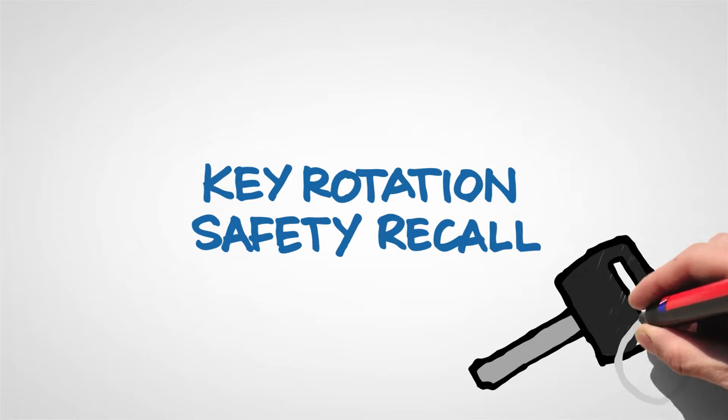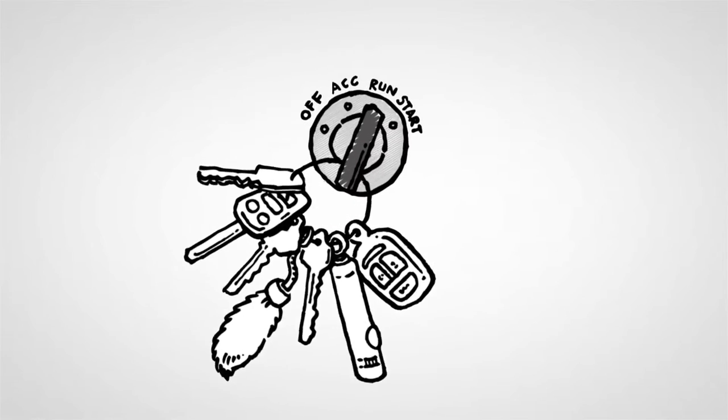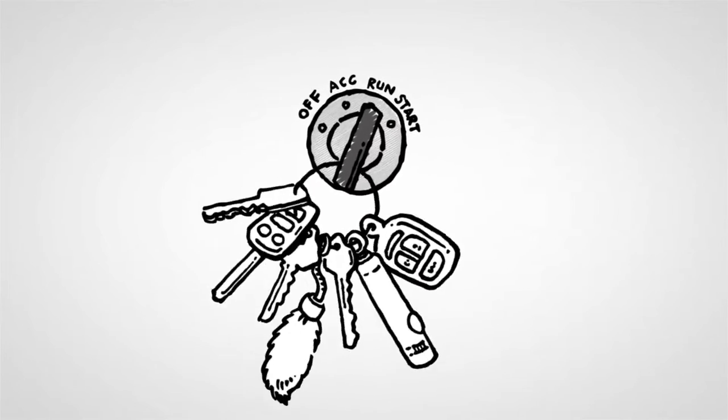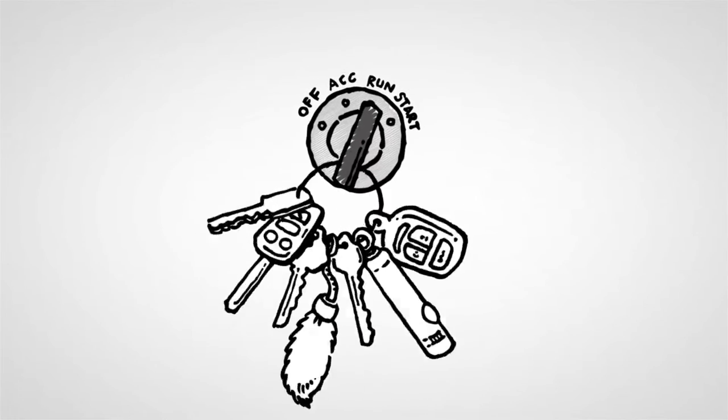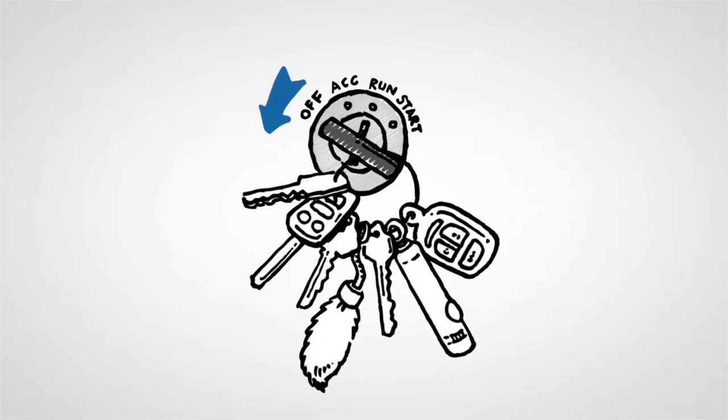So it starts right here. See how the key ring is hooked to your key through this wide slot? Well, if you hit a big bump or swerve abruptly, the weight of other keys dangling from that ring could rotate the ignition key into the accessory or off position.